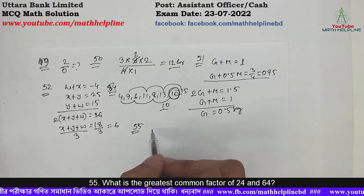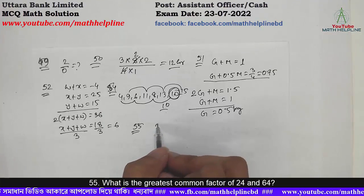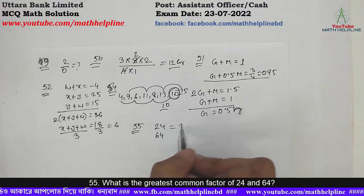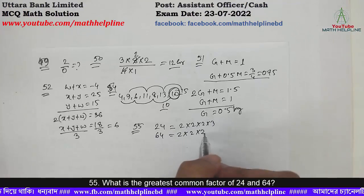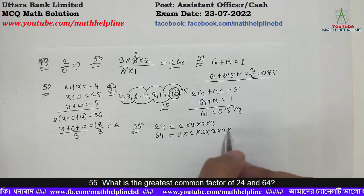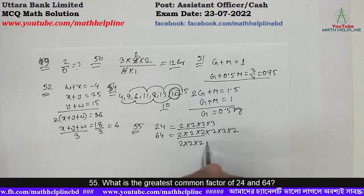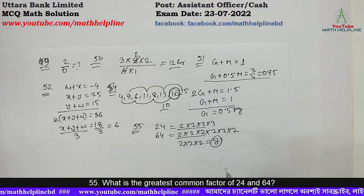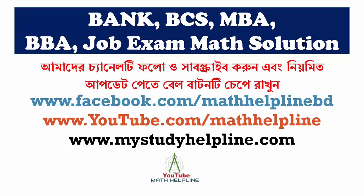For GCF of 24 and 64: finding the common factors by prime factorization of 24 and 64. The greatest common factor is calculated from their common divisors.